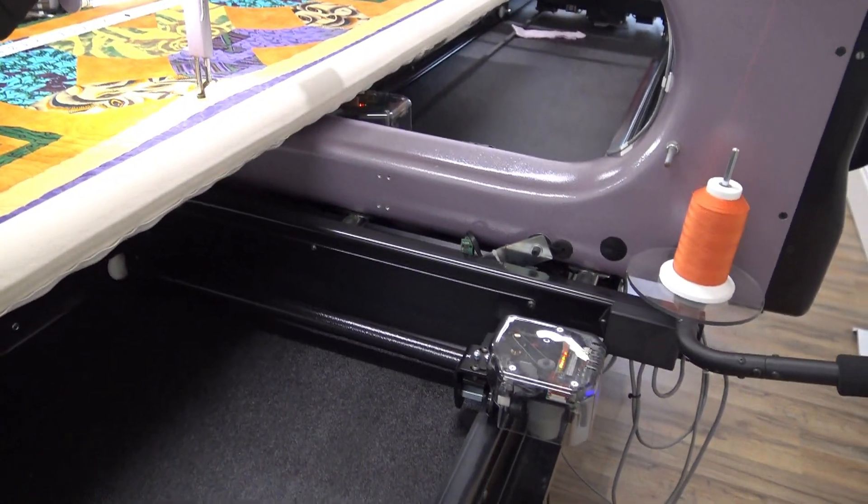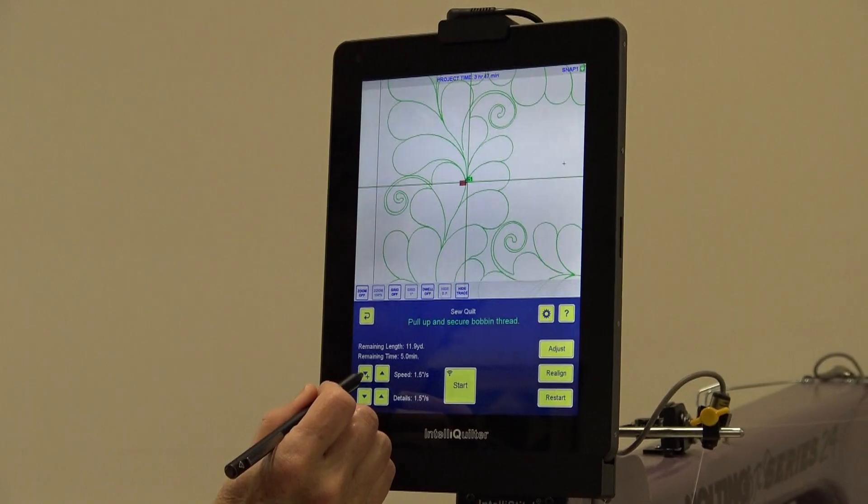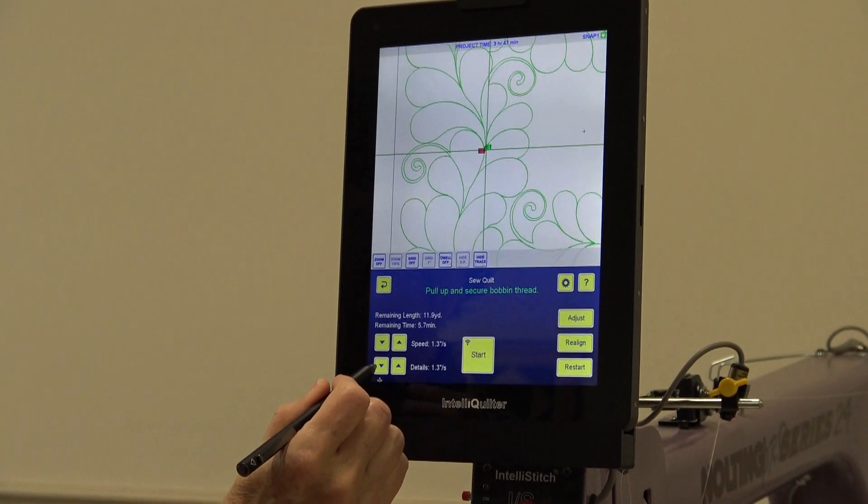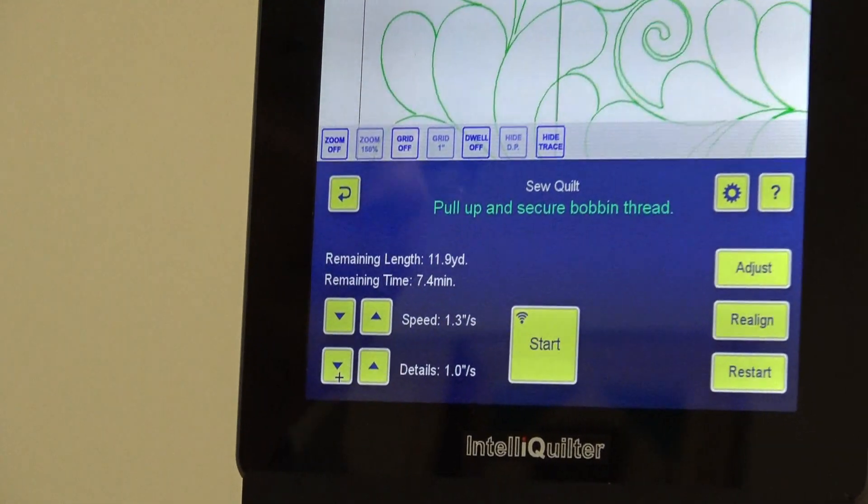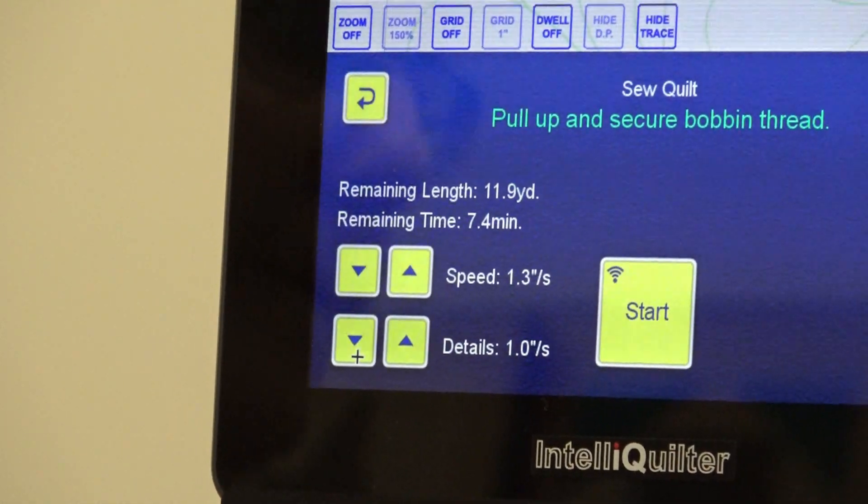Using constant motor speed and IQ's speed adjustments, stitching is accurate, the stitch length is regulated, points are sharp, and curves are smooth, even with complex patterns.